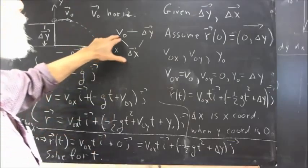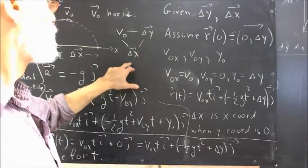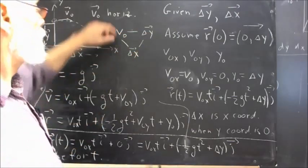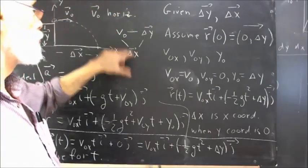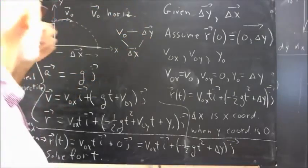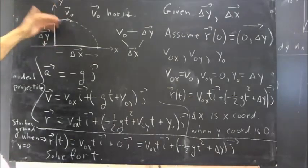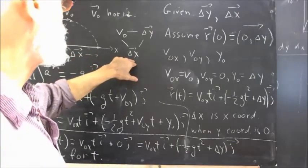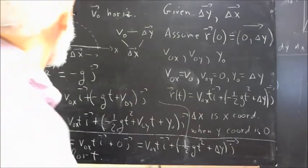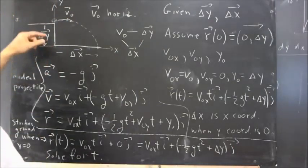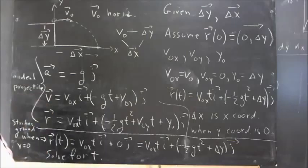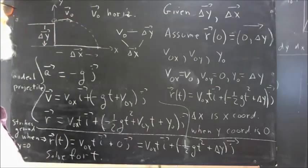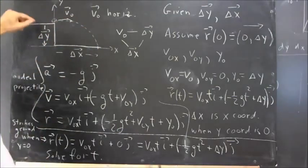There are three parameters here: v-naught, delta y, and delta x. These three are related in that if you know any two of them, you can find the third. If you know v-naught and delta y, we can predict where it's going to land and determine delta x. If we know delta x and delta y, we can determine v-naught. And if we know v-naught and delta x, we can determine what delta y is.